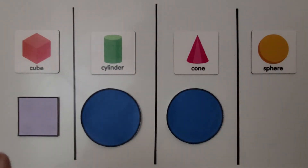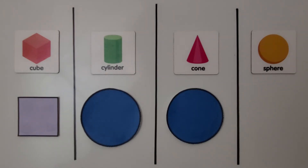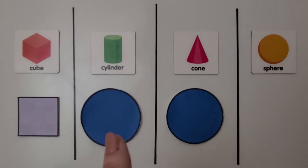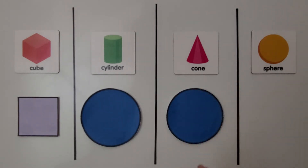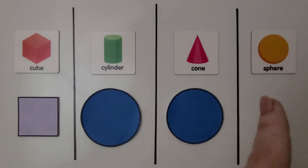A cube is a solid shape that has six flat square surfaces that are all the same size. A cylinder is a solid shape that has two flat surfaces and one curved surface; its two flat surfaces can be shaped like circles. A cone is a solid shape that has a flat surface and a curved surface, and its flat surface could be shaped like a circle. A sphere is a solid shape that has no flat surfaces — it's shaped like a baseball.